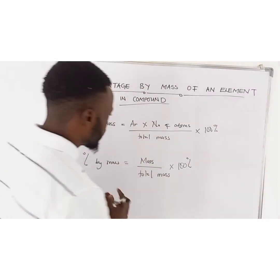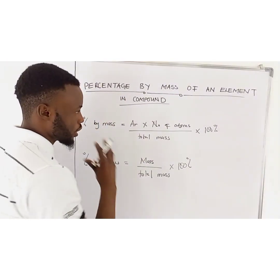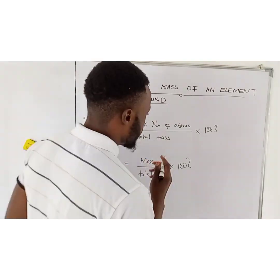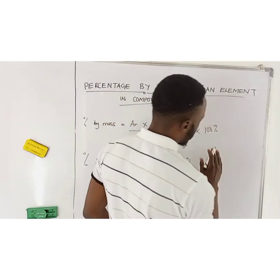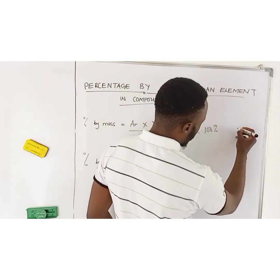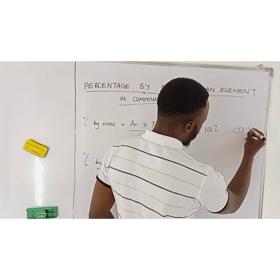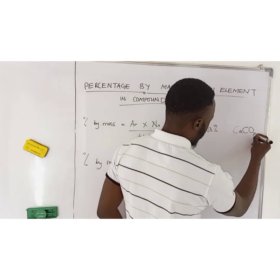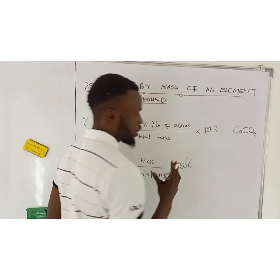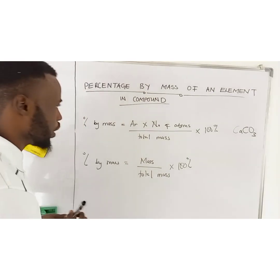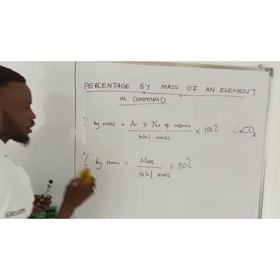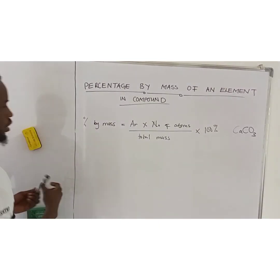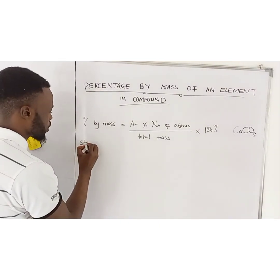When do you use each formula? We are going to do two examples. So the first one — you are finding the percentage mass of oxygen in calcium carbonate. The steps you take are this. So I'll remove the first formula. The steps are: find the MR of the compound.